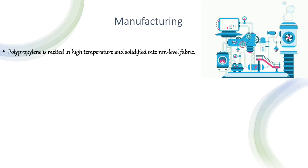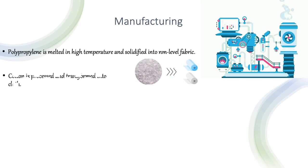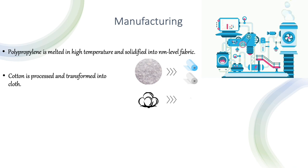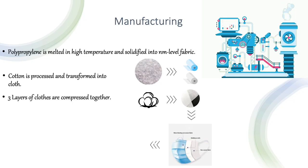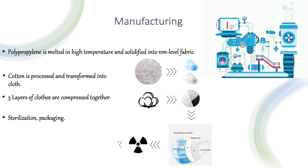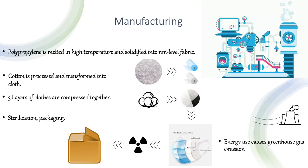Then, how is a face mask actually made from these materials? Firstly, polypropylene is melted at high temperature and solidified into nanometer-level fabric. Then, the cotton is processed and transformed into layers. When the main procedures are finished, the nose clip and rubber strap are added before final compression of the three layers. Finally, after sterilization under radioactivity, the finished product is packaged and waiting for distribution. During manufacture, the main emission is greenhouse gas emission caused by electricity use.